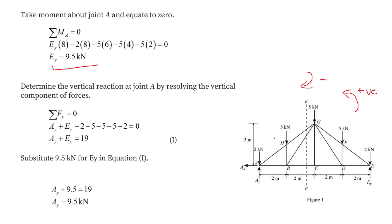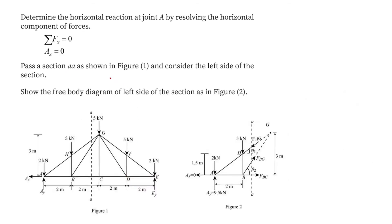Now equating all forces in the vertical direction to zero: the two upward forces are Ay and Ey, and the rest act downward. From this, the value of Ay comes out to be 9.5 kN. Equating all horizontal forces, the only horizontal force is Ax, so the value of Ax equals zero.